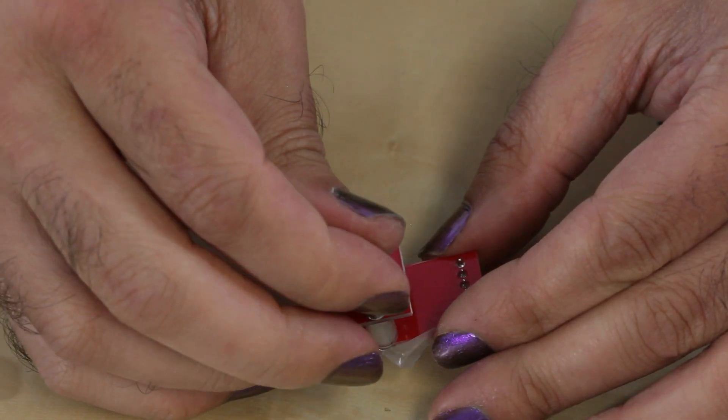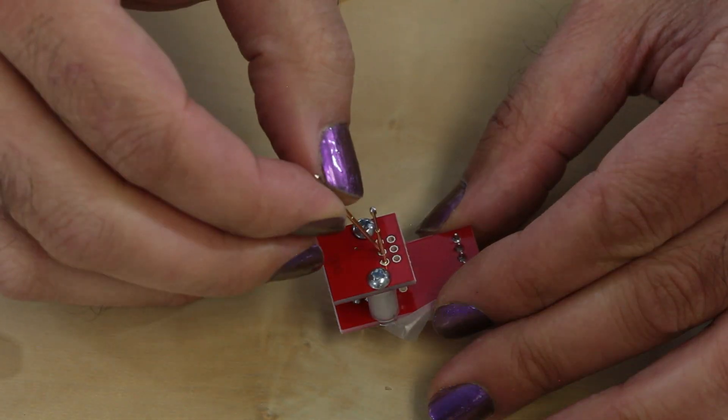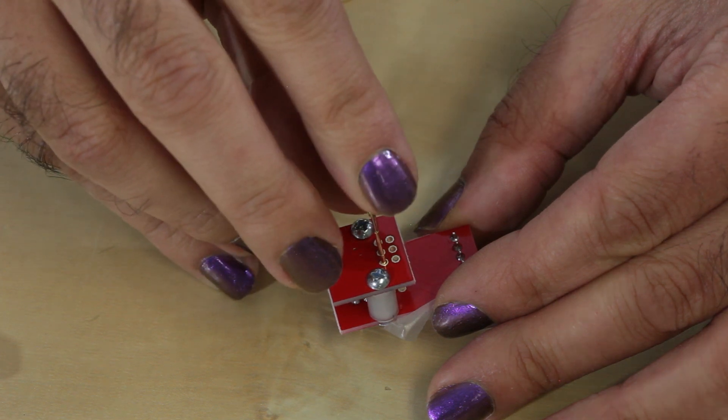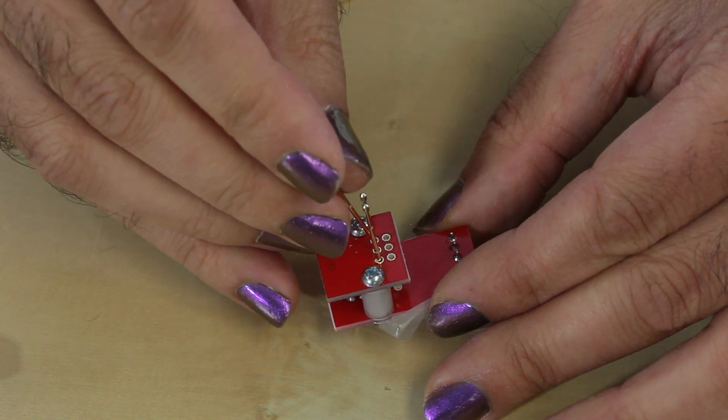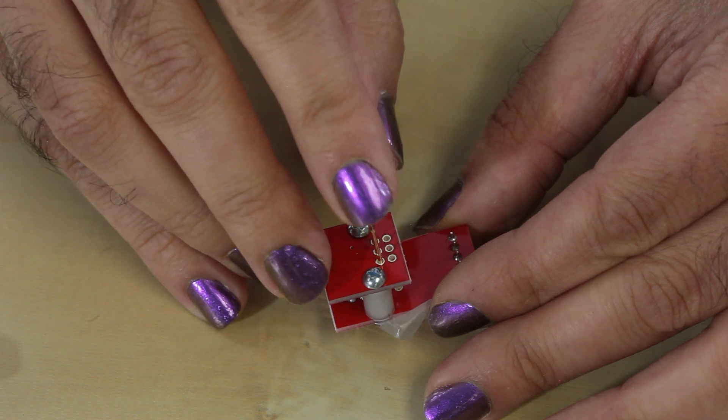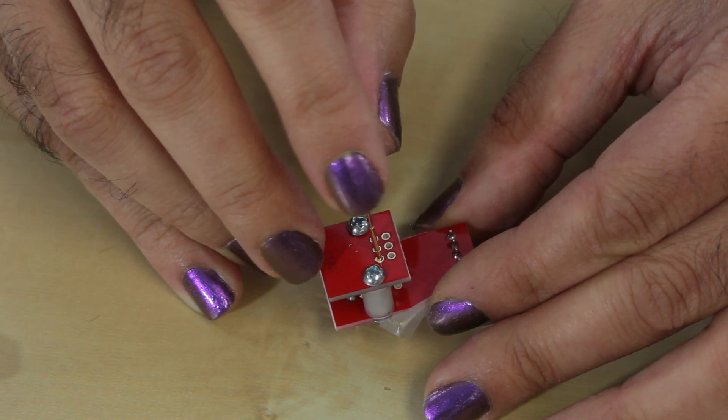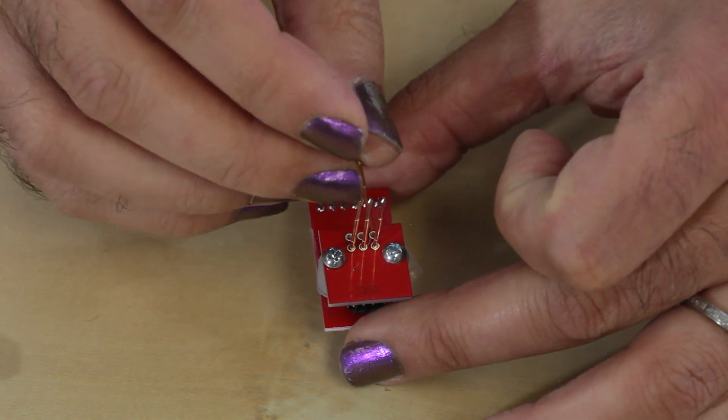Now we're going to drop these pogo pins through one at a time. Make sure that they go through the top hole and into the bottom hole. They won't go through the bottom hole because the bottom hole is covered with tape, as you remember.